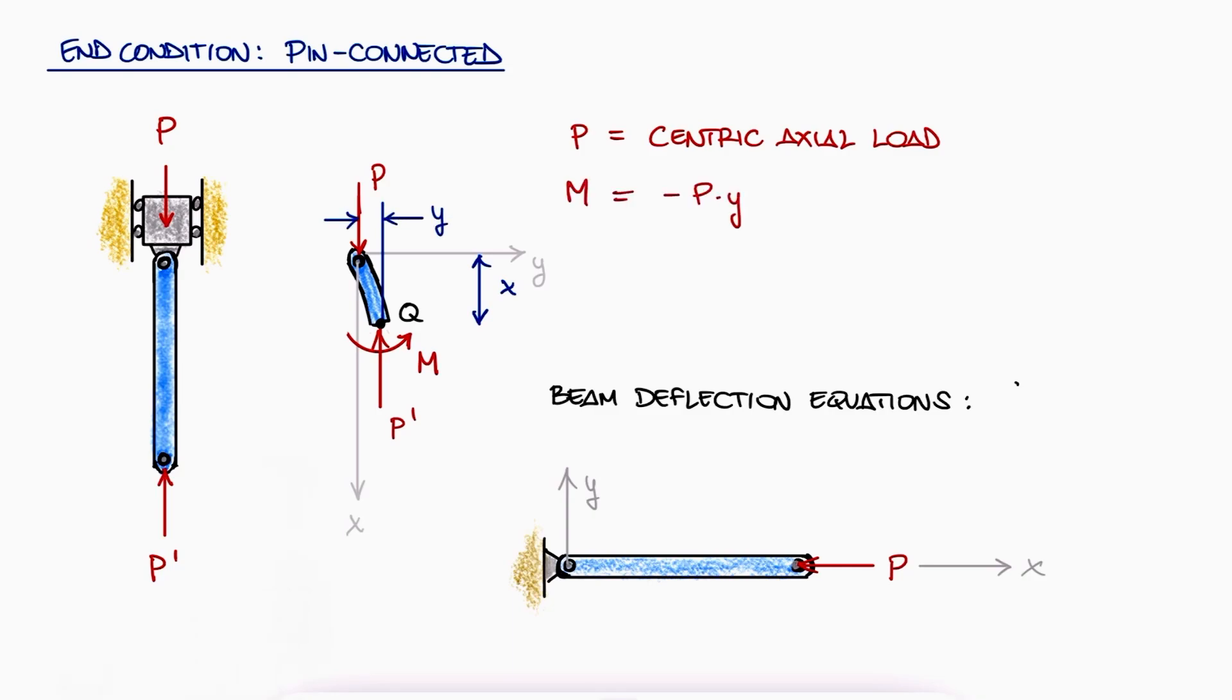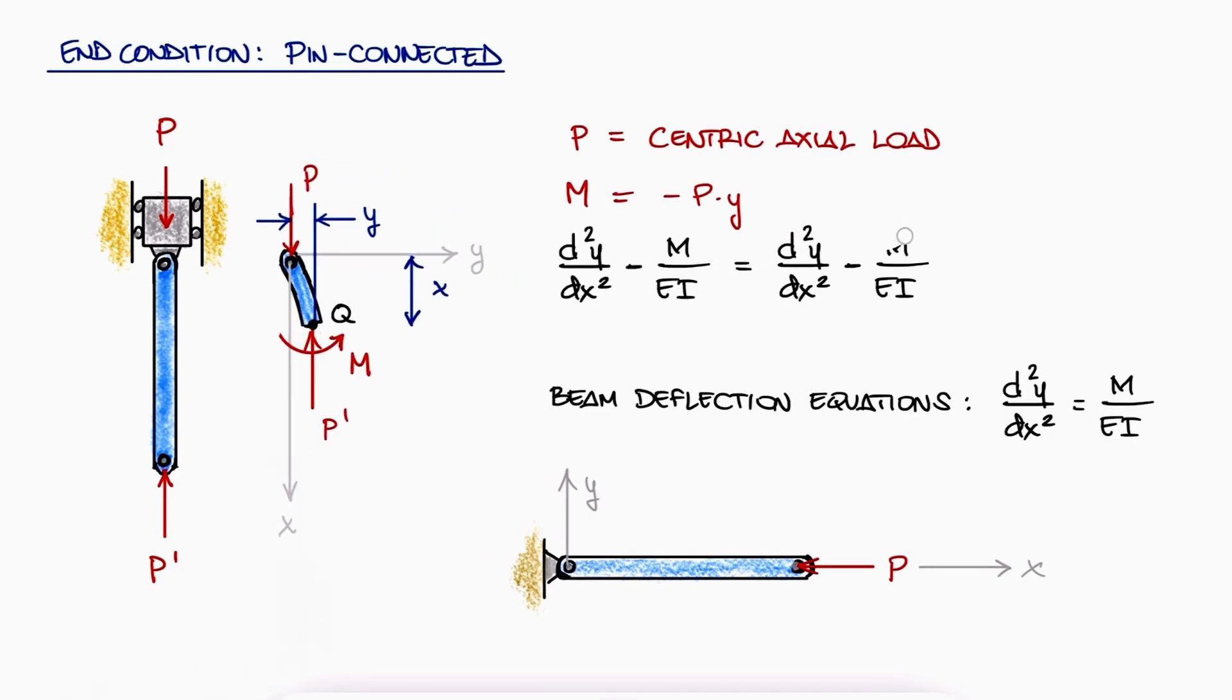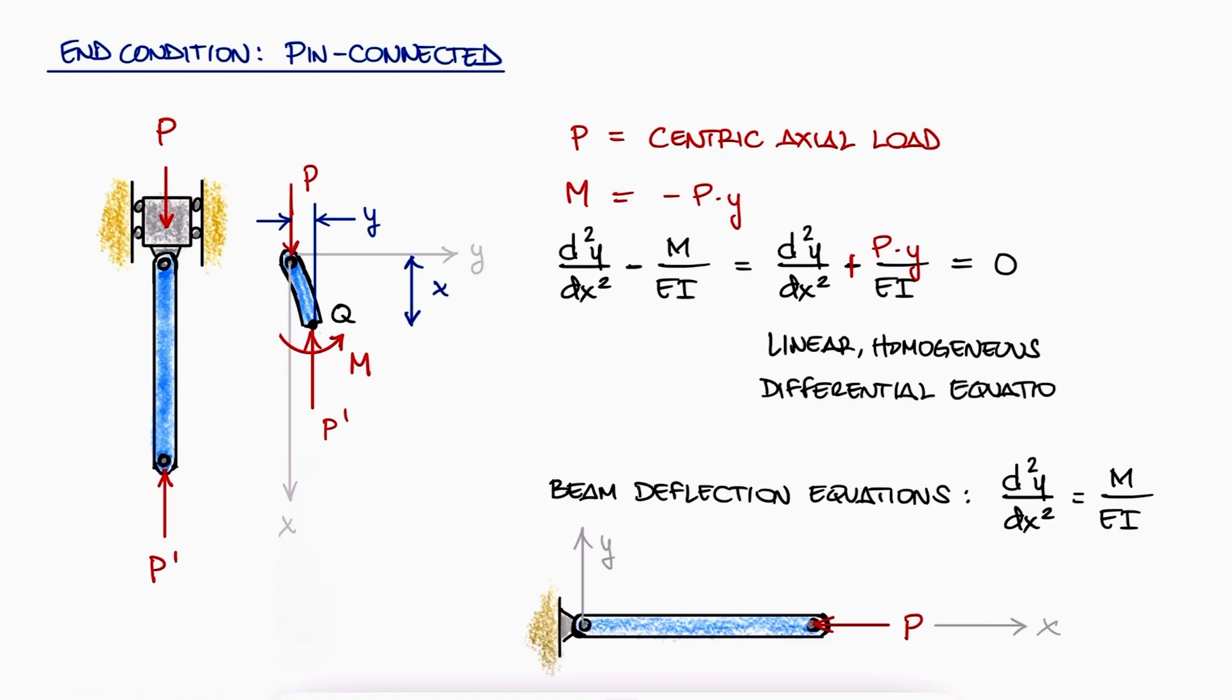Recalling that the second derivative of deflection is M over EI, link below to that specific part of the beam deflection video where we prove this relationship, we see that the second derivative plus Py over EI must be zero. This is a linear, homogeneous differential equation.